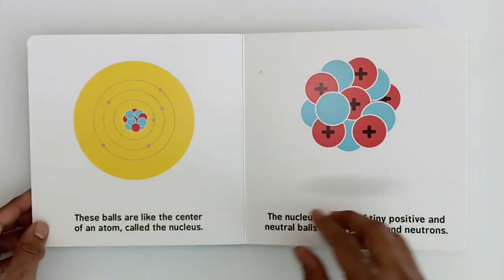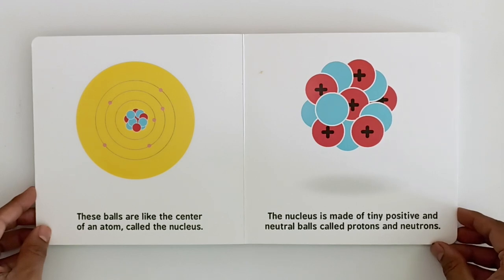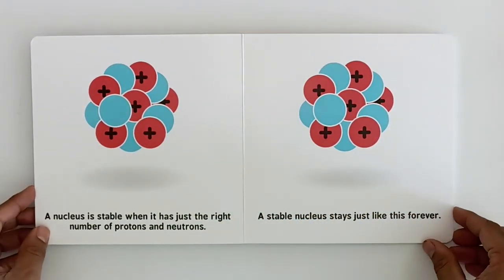These balls are like the center of an atom called the nucleus. The nucleus is made of tiny positive and neutral balls called protons and neutrons.